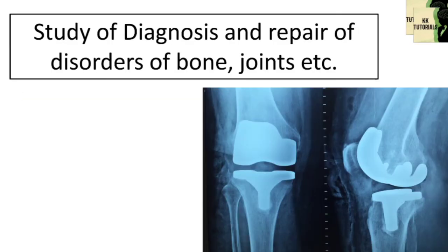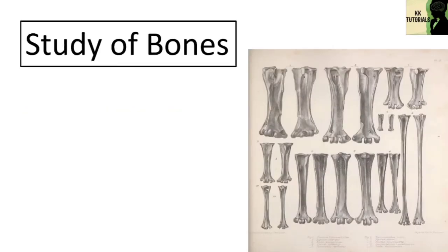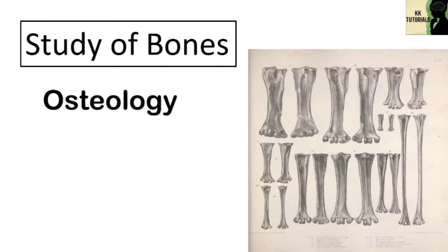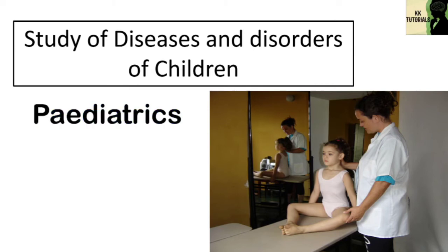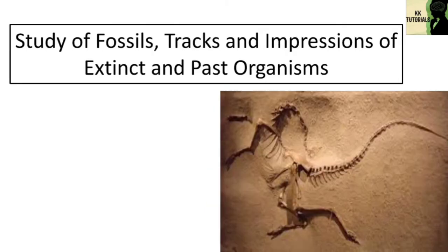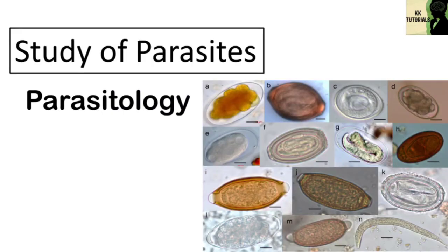The study of eyes is called ophthalmology. The study of diagnosis and repair of disorders of bones and joints is called orthopedics. The study of bones is called osteology. The study of diseases and disorders of children is called pediatrics. The study of fossils, tracks, and impressions of extinct and past organisms is called paleontology. The study of parasites is called parasitology.